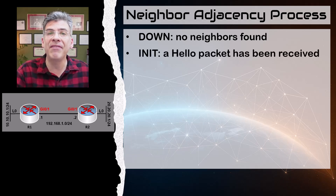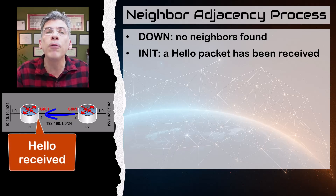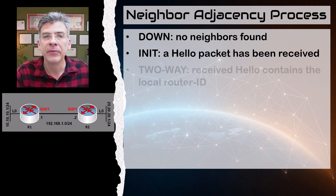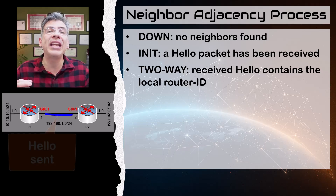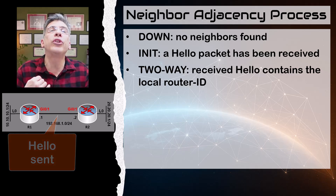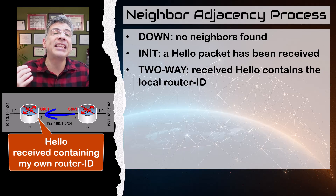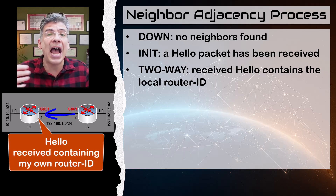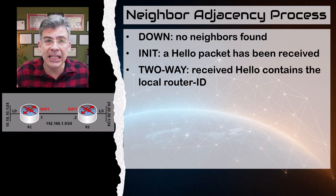Next, we have the init state. This is the first state that an OSPF router enters when the first hello packet is received from a potential neighbor. Next, we have the two-way state. This state is entered when a router sees its own router ID in the received hello packet. This indicates that the neighbor has also received our hello packet with that information, and has sent back a hello with our own router ID.